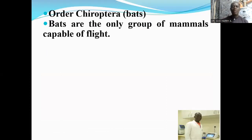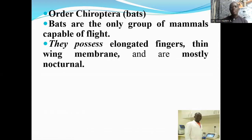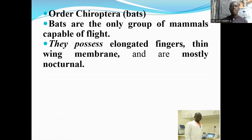The next order has a group of the only mammals capable of flight — the bats. Bats are the only group of mammals capable of flight. They possess elongated fingers connected by thin wing membranes, which are used for flight, and these organisms are mostly nocturnal. Their eyes are small and inefficient, but their ears are usually well-developed. Nearly 1,000 species are currently recognized, and many are enormously abundant.